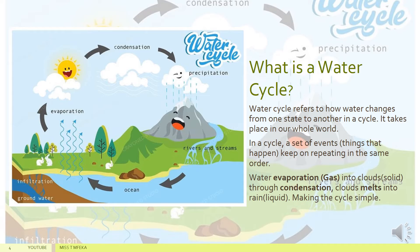Let's ask ourselves for a minute: what is a water cycle? A water cycle refers to how water changes from one state to another in a cycle that takes place in our whole world. In a cycle, it has a set of events — events are things that happen and keep on repeating in the same order.